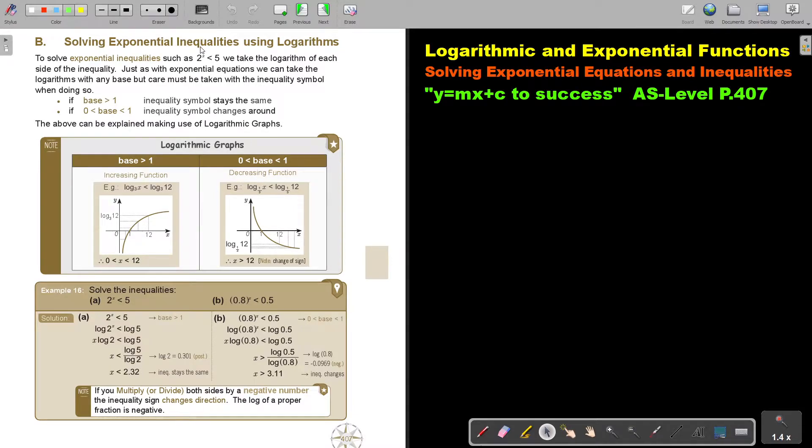Solving exponential inequalities using logarithms. To solve exponential inequalities such as 2 to the power x is smaller than 5, we take the logarithm of each side of the inequality. Just as with exponential equations, we can take the logarithm with any base, but care must be taken with the inequality symbol when doing so. If the base is bigger than 1, the inequality symbol stays the same. But if the base is between 0 and 1, the inequality symbol changes around. The above can be explained making use of logarithmic graphs.